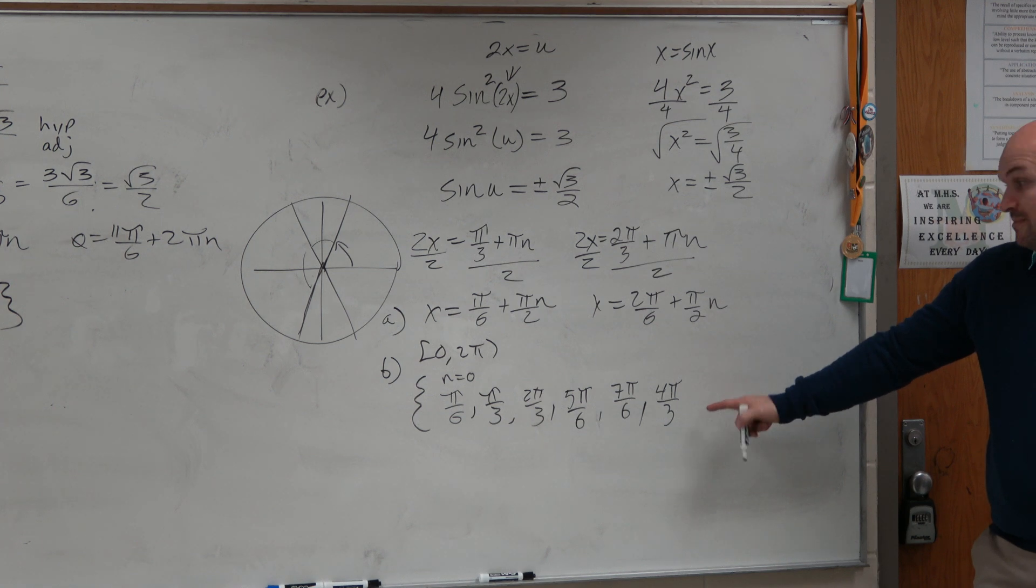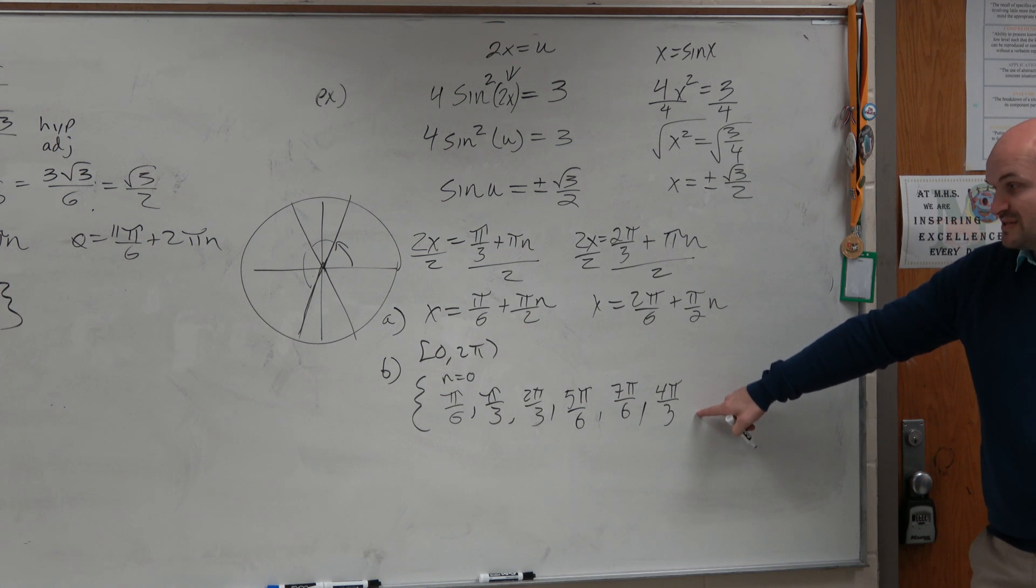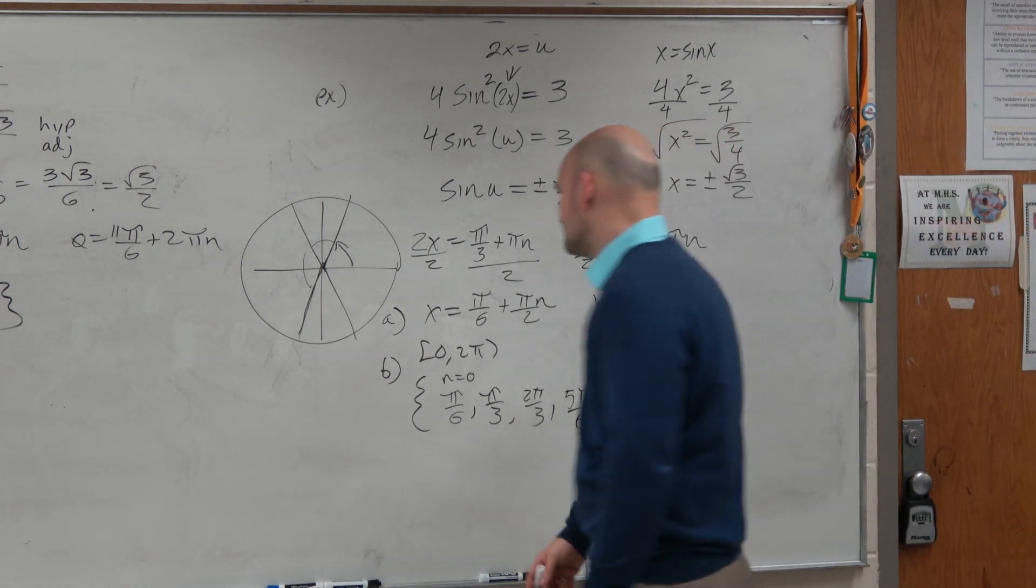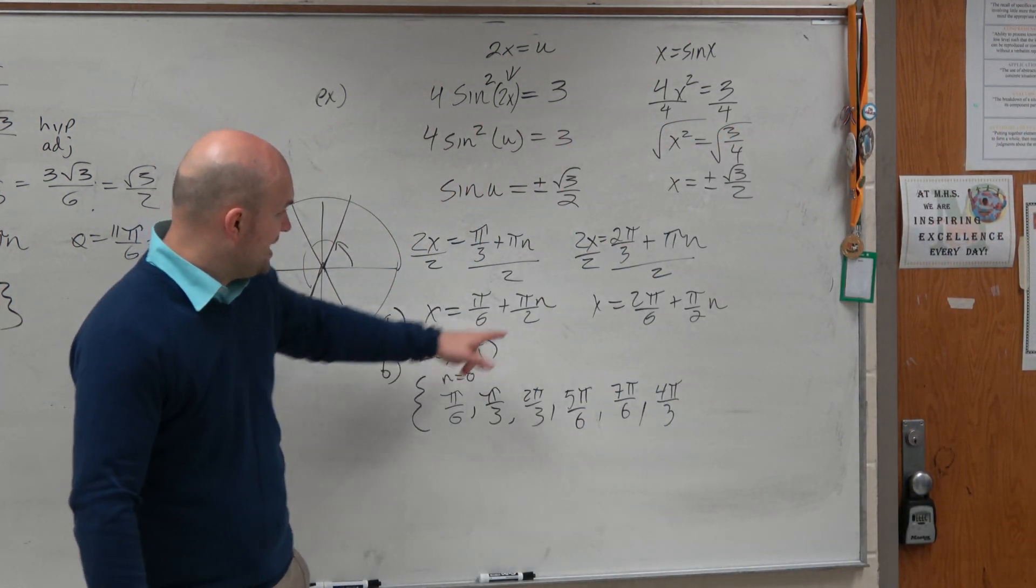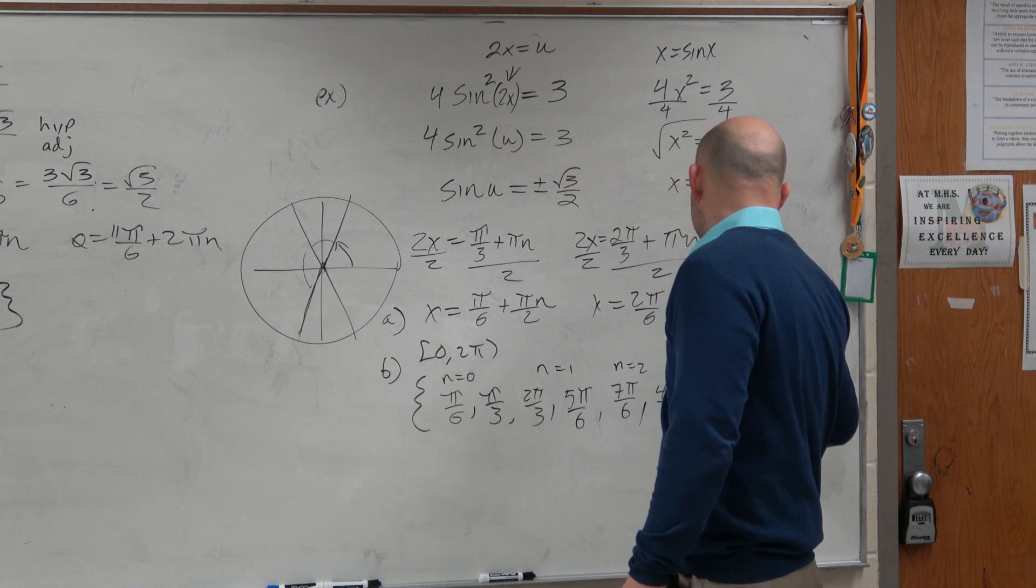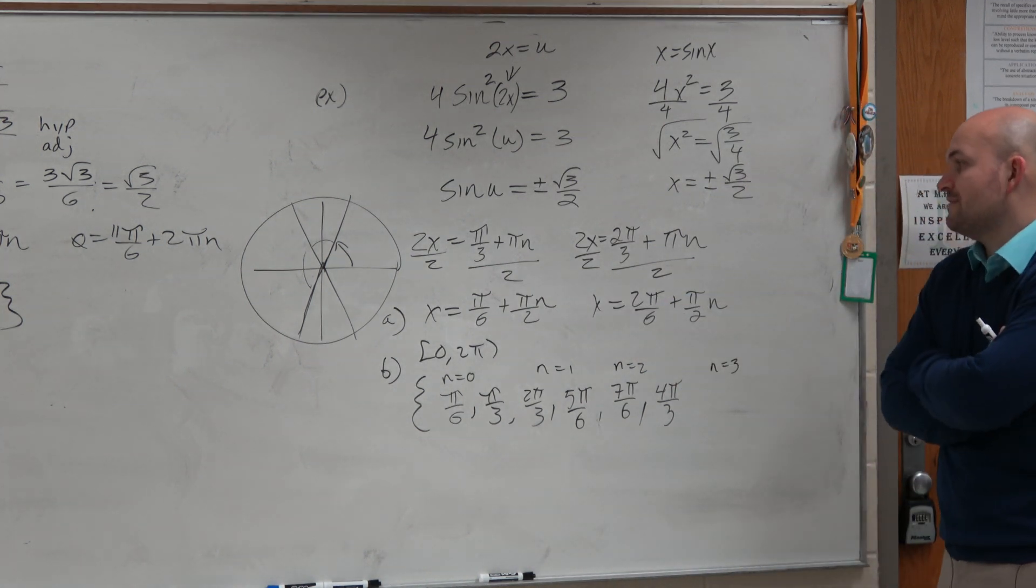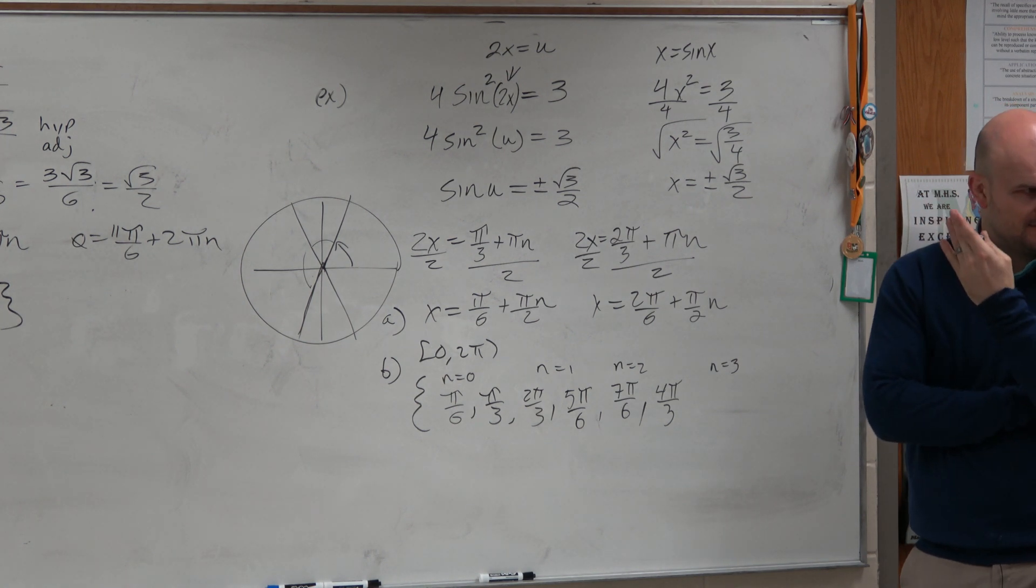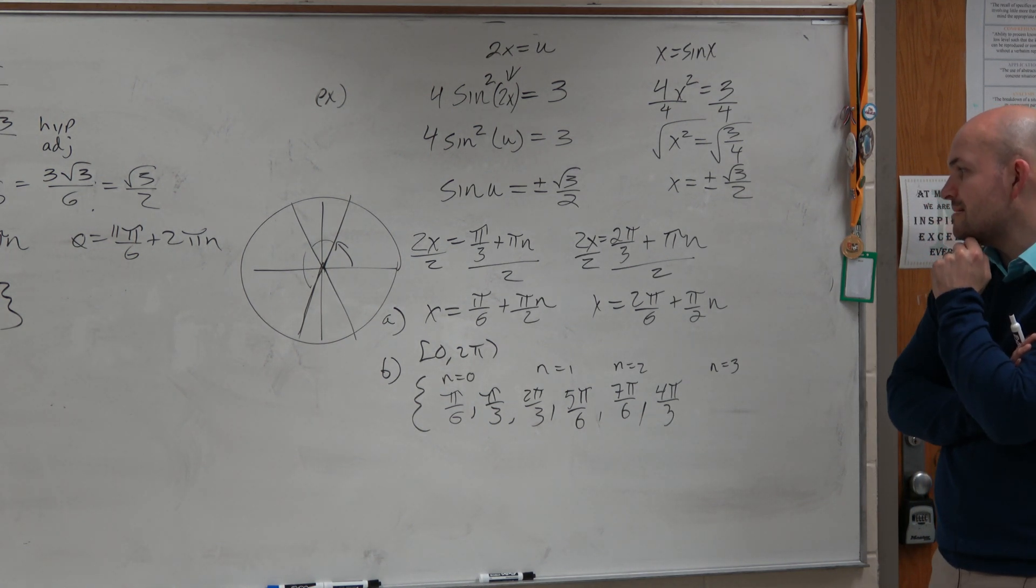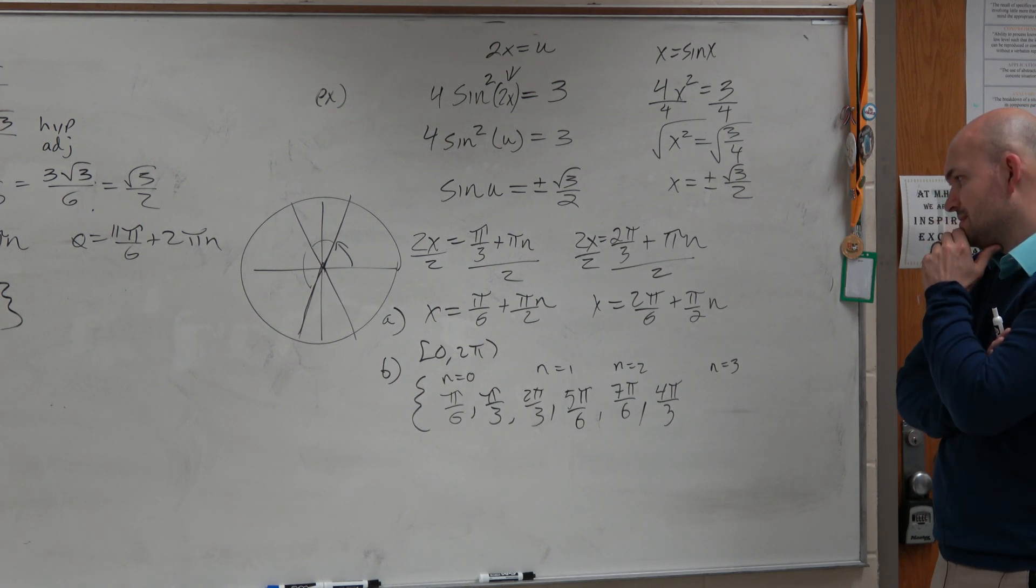And again, do we still have more room between 0 and 2π? Because what's 2π in terms of denominator 6? It's like 12π over 6, right? So we still got a while to go. So I did n equals 0. This was n equals 1. Here's n equals 2. Let's do n equals 3. When n equals 3, I would have 3π over 2, which in terms of 6 would be 9π over 6. Yes, I'm doing some of the fractions in my head for you guys. So 9π over 6 plus π over 6 would be 10π over 6. Actually, stop.